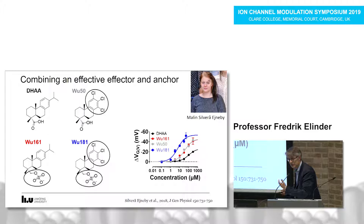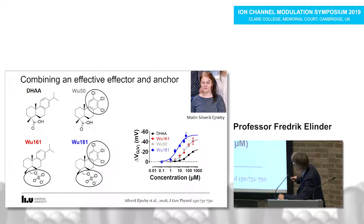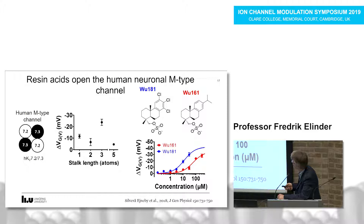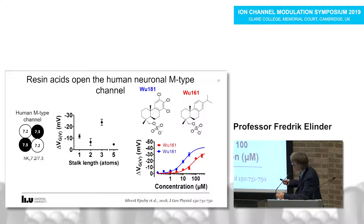Knowing we had good anchors and good effectors, couldn't we combine them? That is exactly what Malin did: she combined a very good anchor with a very good effector and produced this molecule. The dose-response curve is clearly shifted to lower concentrations — a clearly more effective compound. We simultaneously did experiments on the KV7.2/7.3 M channel, and the take-home message is that we have very similar effects there as on our super-shaker potassium channel. With a stalk of three atoms we had a much larger effect than with one, two, or five atoms.